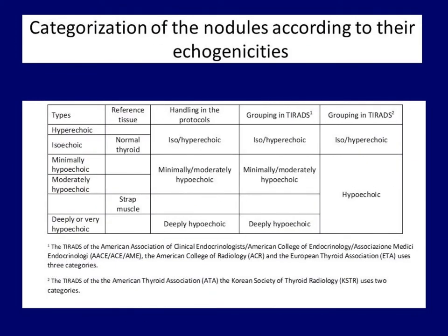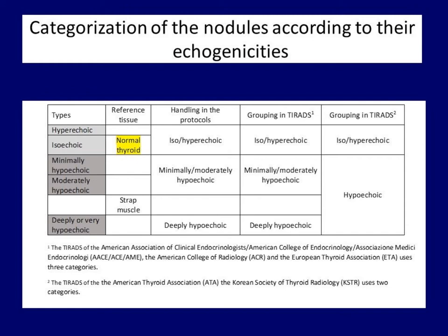Although we have no biological standard which echogenicity can be compared to, at first sight the interpretation does not seem to be a very difficult task. We have two reference tissues. The more important one is the normal thyroid. If the nodule is more or similarly echogenic to the normal thyroid, it belongs to the iso-hyperechoic subgroup. If the nodule is darker than the normal thyroid, it belongs to the hypoechoic subgroup.